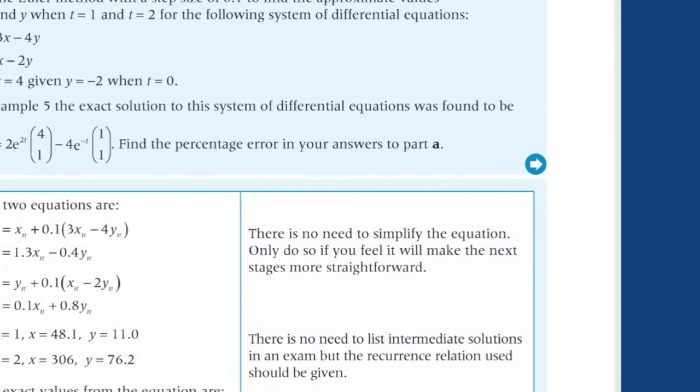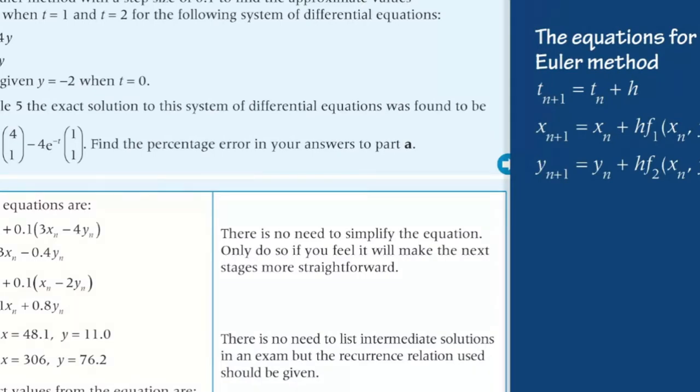The equations for the Euler method are given in the formula book. xn plus 1 equals xn plus h multiplied by f1 of xn yn tn. yn plus 1 equals yn plus h multiplied by f2 of xn yn tn. tn plus 1 equals tn plus h.